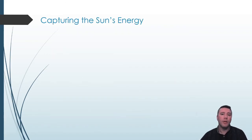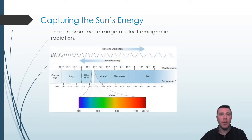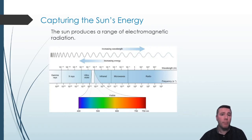As a result of nuclear fusion, the sun produces a variety and range of electromagnetic radiation. For example, we can perceive infrared radiation as the sun's warmth. Ultraviolet radiation is mostly blocked by the Earth's ozone layer. But visible light is the range of electromagnetic radiation that we can perceive with our eyes. Based on the wavelength, we perceive different colors of this visible light.